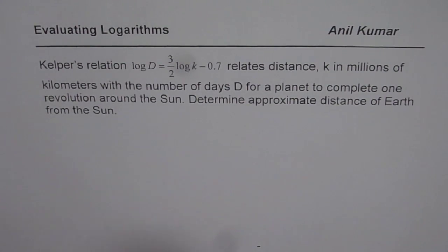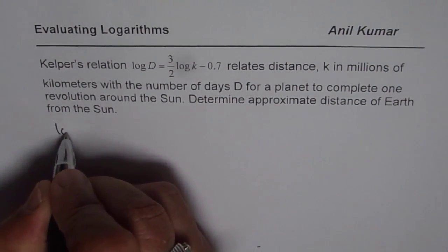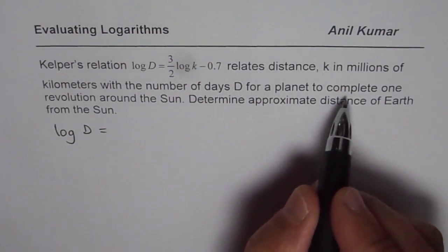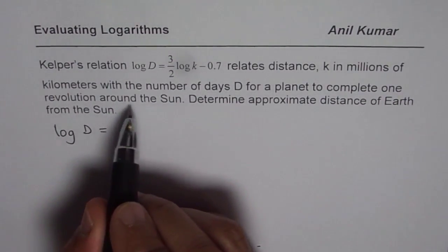So this is a very famous equation. Let me write it down once again. It is log of D where D is the number of days a planet takes to complete one revolution around the sun.